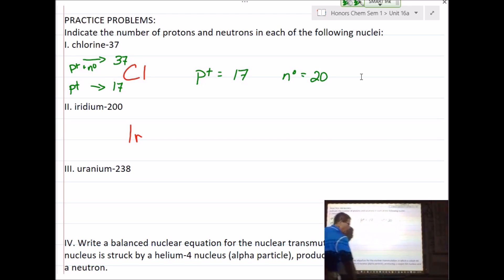Iridium, I don't believe is one of your 52. 200. And iridium is in the middle here. So, 77. So how many protons? 77. And neutrons? 123. Very good. Way to use that mental math. Love it.